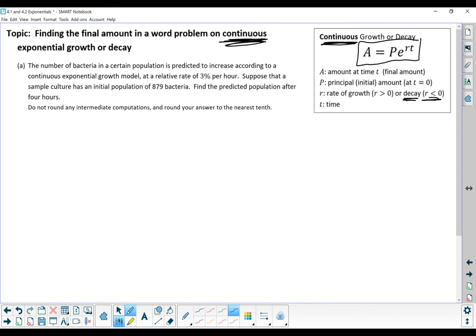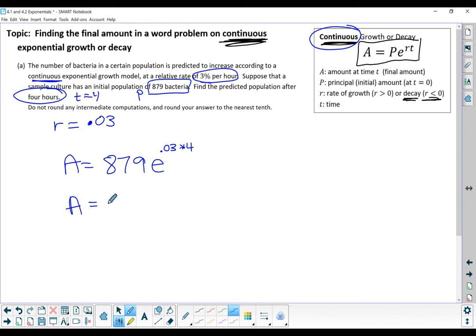This is bacteria in a population that are increasing, according to a continuous growth model, at a rate of 3% per hour. So our rate is 0.03. Suppose that we have an initial population of 879 bacteria. Find the population after 4 hours. So our equation is 879 times E to the power 0.03 multiplied by 4. And again, this formula is on your formula sheet. Just make sure you know where to find it on the formula sheet. And the keyword is continuous. So after those 4 hours, we would have 991.1 bacteria.